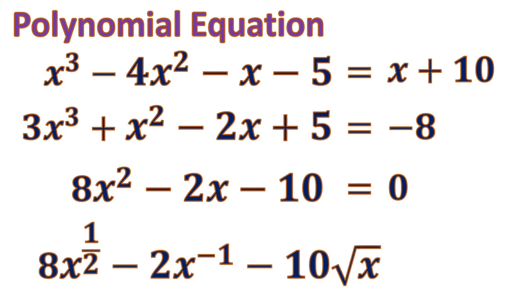Now, how about this? 8x to the power of 1 half minus 2x to the negative 1 minus 10 squared of x equals 0. So, this is a polynomial equation. This is actually not a polynomial equation.